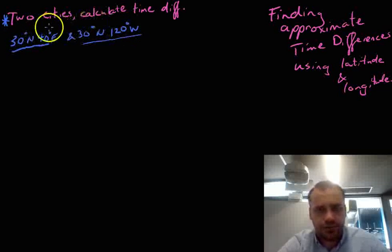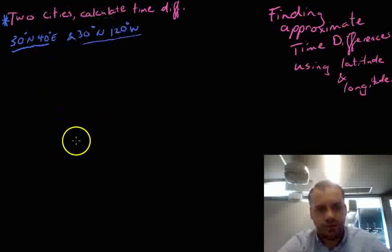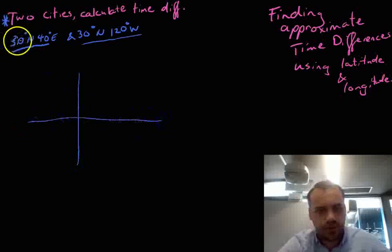So they're on the same line north and south but east and west are in different places. If I draw a really quick crude map, we can see 30 degrees north, 40 degrees east is somewhere over here.